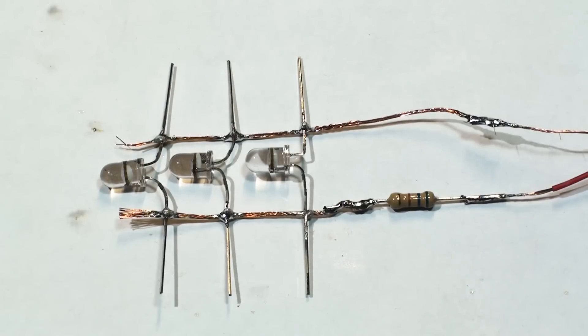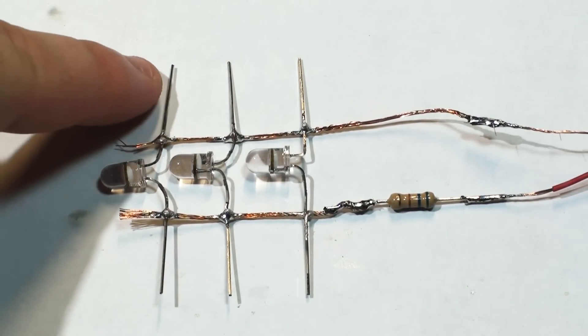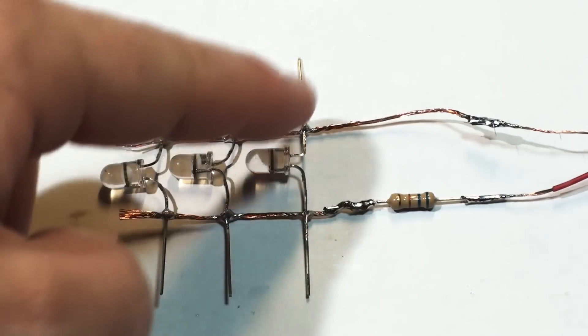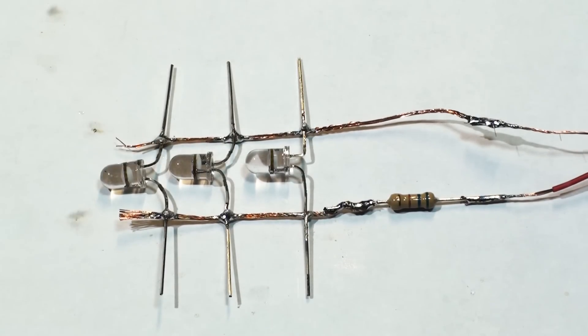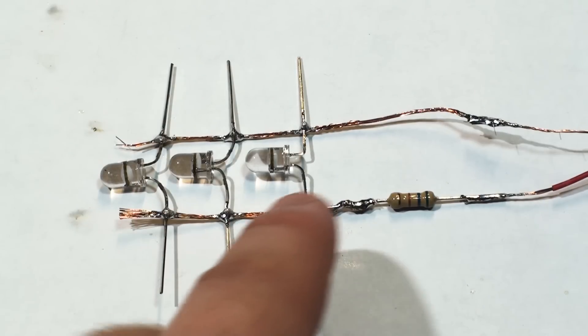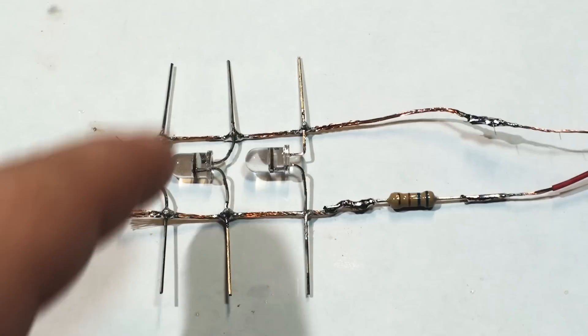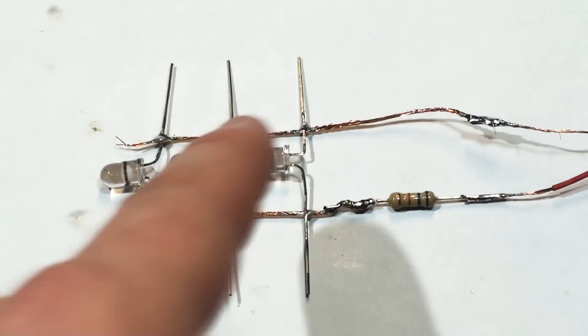Here we are, we're almost finished. We have a lot of excess legs coming off the leads here. Take some wire cutters and just cut those off. We won't be needing those. Also, this exposed extra wire on the leads. Last thing, you want to cover all this exposed wire with electrical tape. That way, if one wire touches the other side, it will not short out your LEDs.